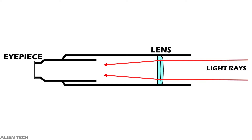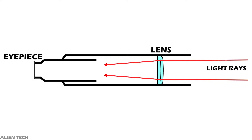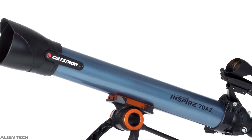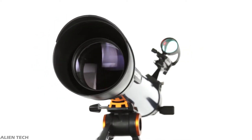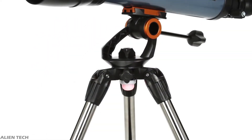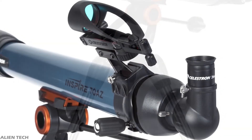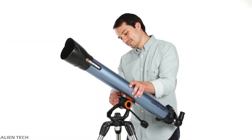A properly designed refractor telescope gives better and sharper images. As refractor telescopes use lenses instead of mirrors, it becomes very expensive to manufacture bigger aperture refractor telescopes, so usually you'll find most refractor telescopes with an aperture size of four inches or lower. The majority of telescopes which have less than a four-inch aperture are refractor telescopes.